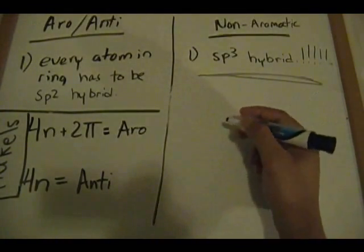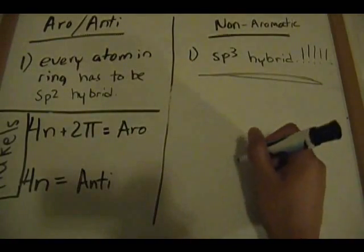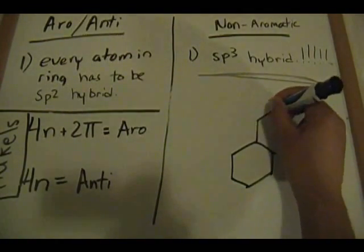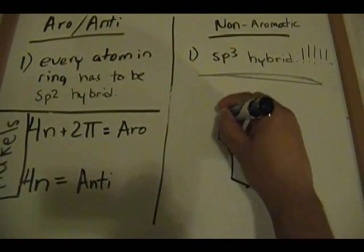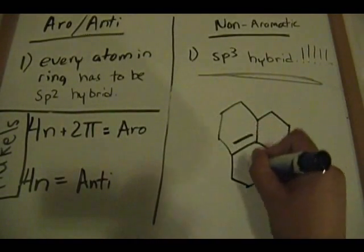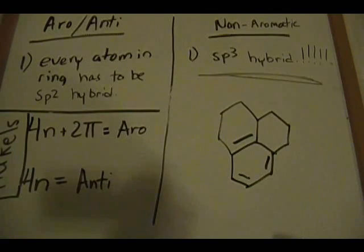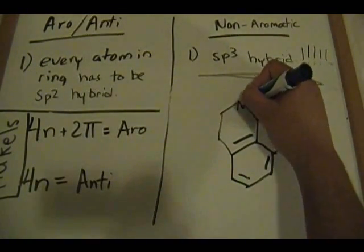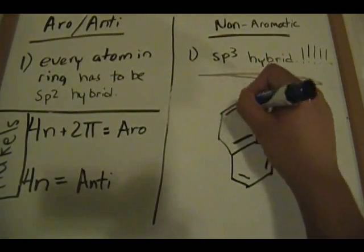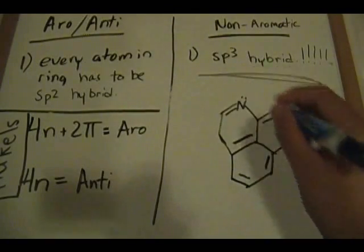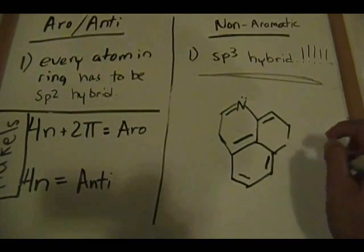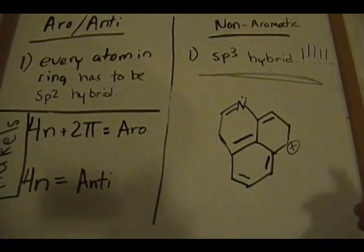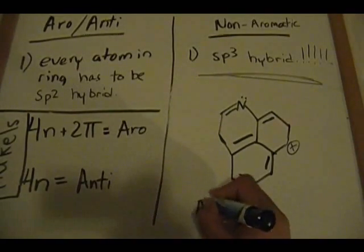Okay, here's the example — you guys tell me in the comments on my page. You have a ring structure like that, that, that, that, that, that, that. And you have a nitrogen here, like that, with a positive charge. It's up to you guys now — is this aromatic or non-aromatic?